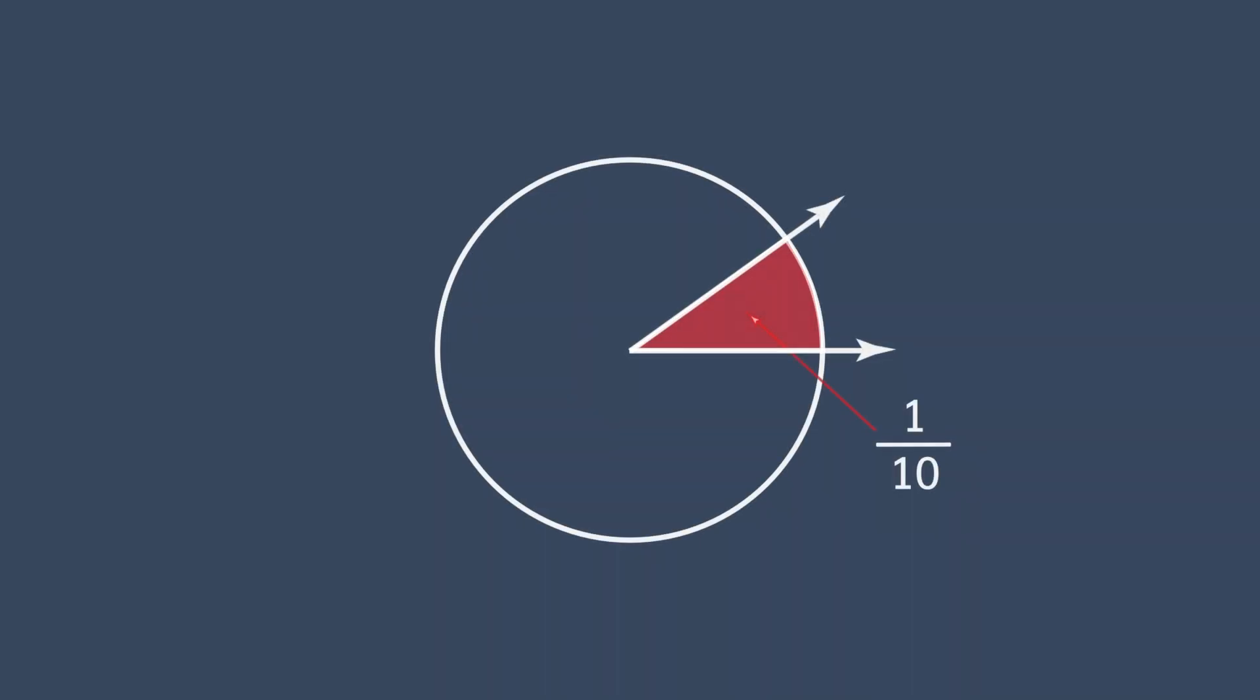How many degrees is 1 tenth of a circle? To figure out the measure of the angle in degrees, we have to create an equivalent fraction with a denominator of 360. To get 360 in the denominator, we need to multiply 10 by 36. Remember, we have to do the same thing to the numerator. So 1 times 36 gives us 36. Now we have 36 over 360. To find the degrees, we have to look at the numerator. The numerator is 36, so the measure of the angle is 36 degrees.